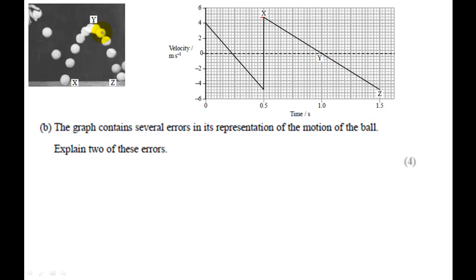And then it's going to increase its magnitude again as it falls back down to point Z. So error number one we can spot on the graph is that the ball has given an initial velocity. It should be zero. At time zero, the velocity should also be zero. That's one point.